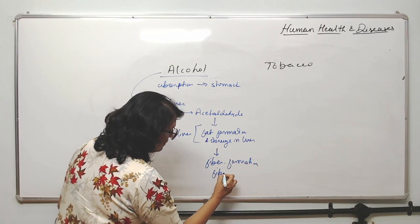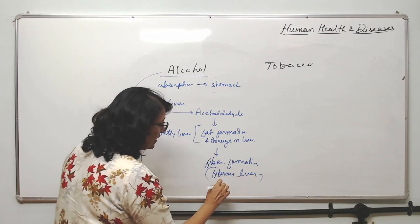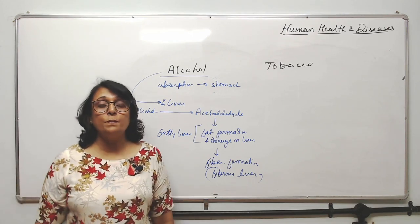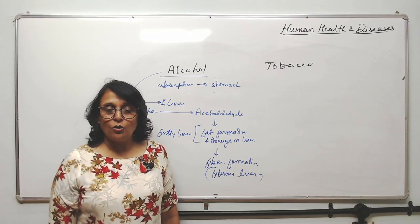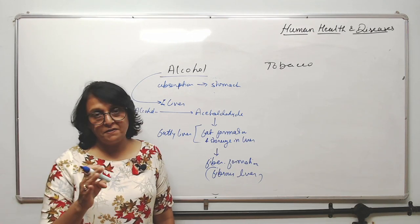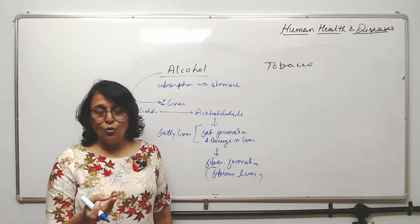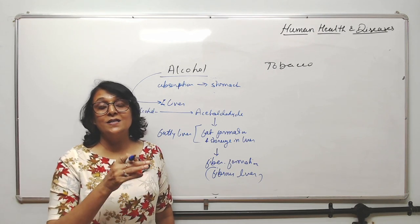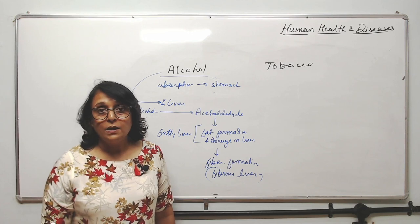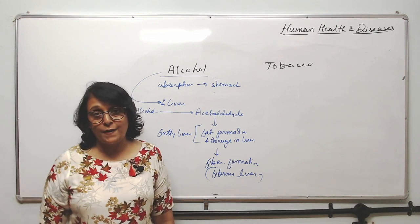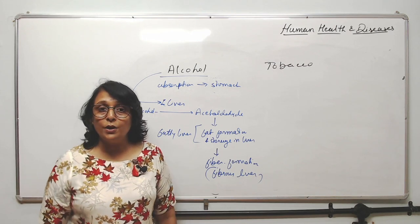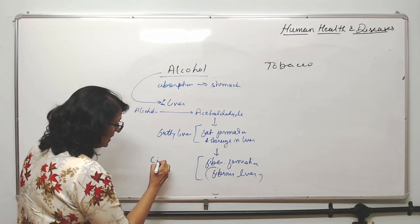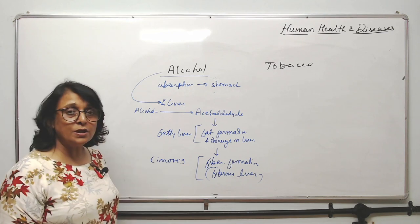This leads to fibrous liver — when the liver becomes fibrous, it becomes hard and that part becomes non-functional. The liver performs many important functions: synthesizing clotting factors, glucose metabolism, removing unwanted amino acids, converting ammonia into urea, bile production, emulsification of fat, and removal of bilirubin and biliverdin. This condition of fibrous liver is known as cirrhosis or liver cirrhosis.